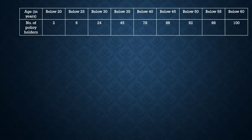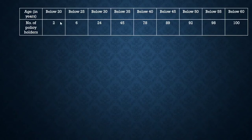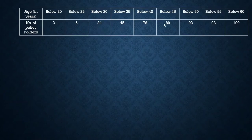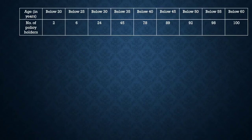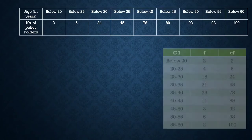In Question 3, a life insurance agent found data for 100 policyholders aged 18 to below 60. The data is given as cumulative frequencies: below 20 → 2, below 25 → 6, below 30 → 24, below 35 → 45, and so on up to below 60 → 100. Our job is to first convert these cumulative frequencies into a frequency distribution table.